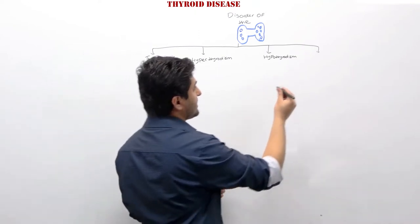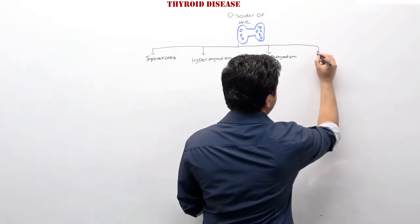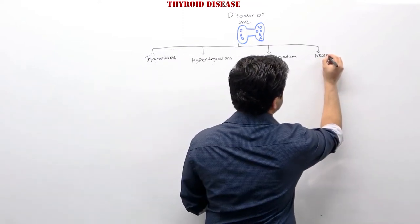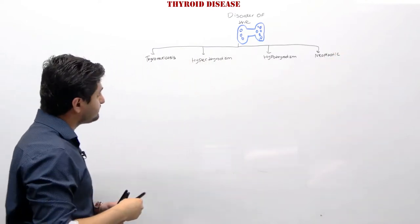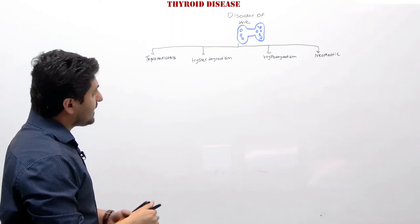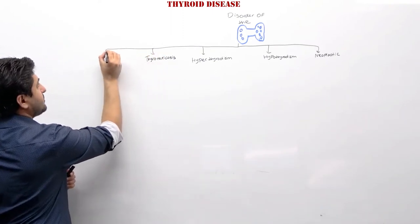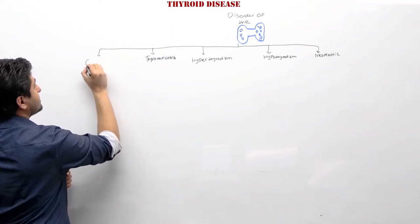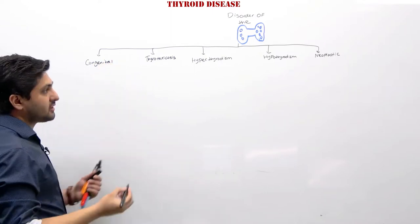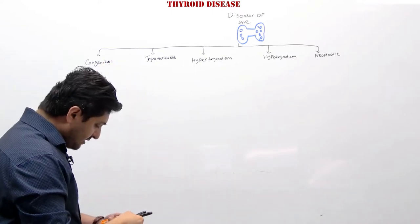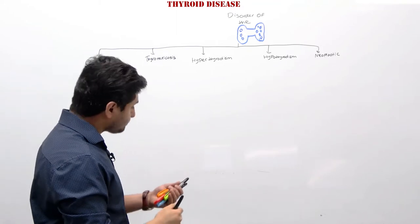We can also classify thyroid disorders as neoplastic disorders of the thyroid gland — meaning cancers — and there can also be congenital problems with the thyroid gland. Now let's start by talking about hyperthyroidism and hypothyroidism first, then we'll come back to the others.